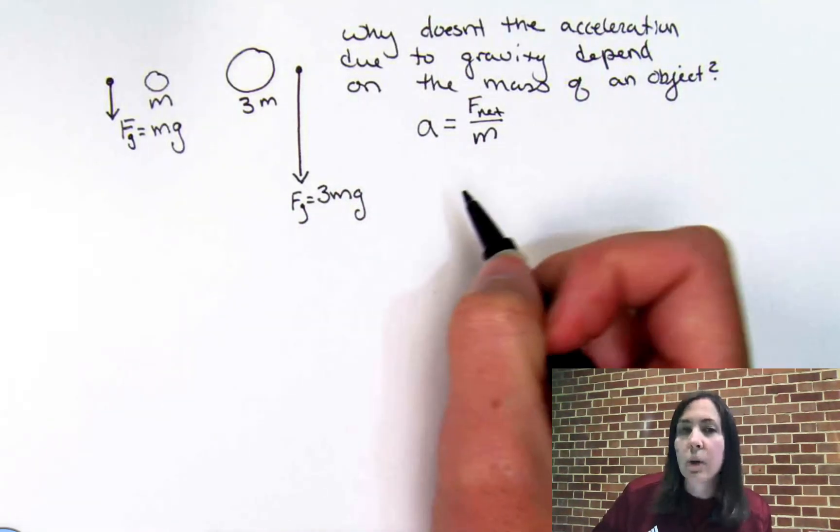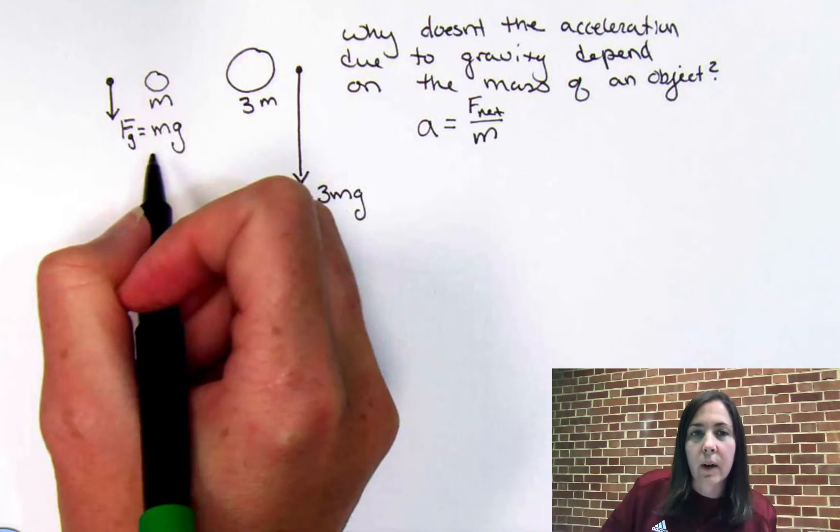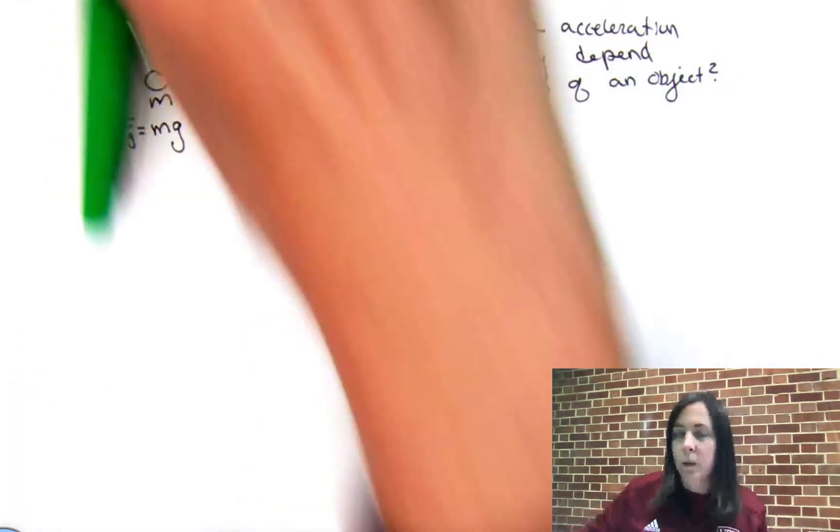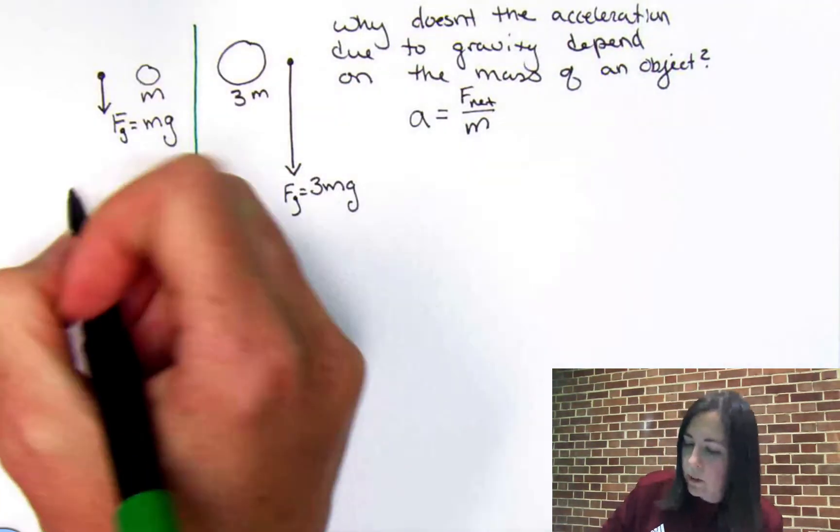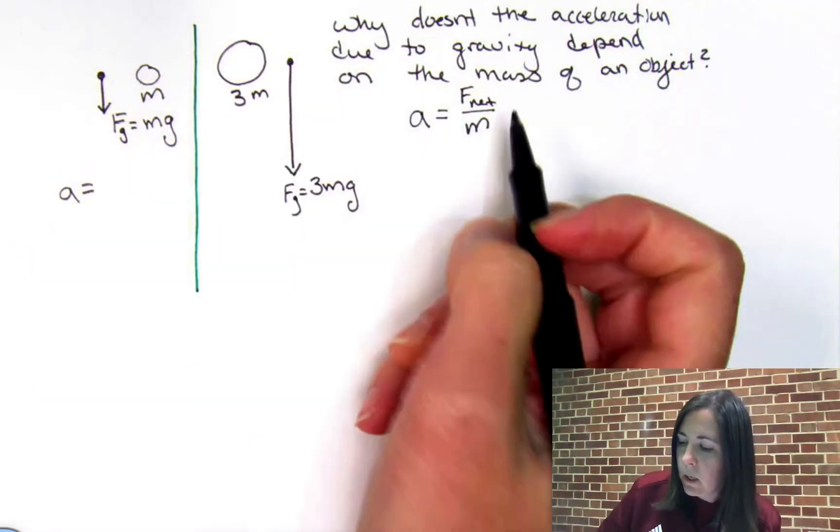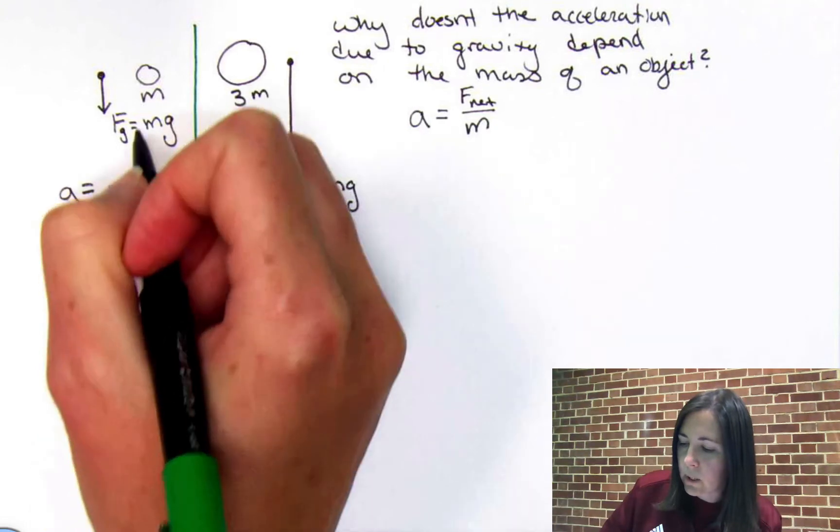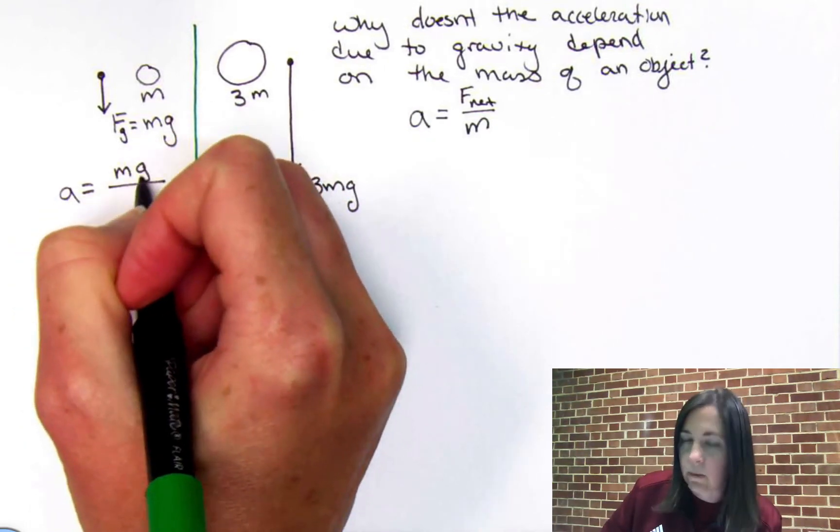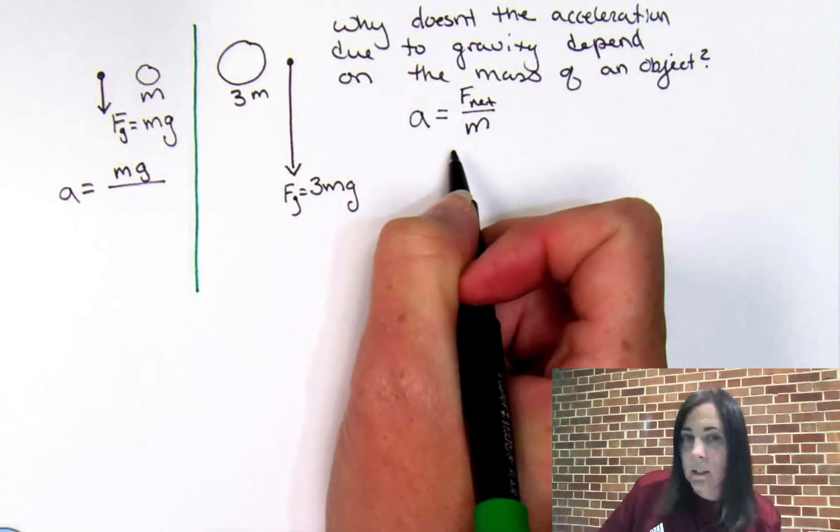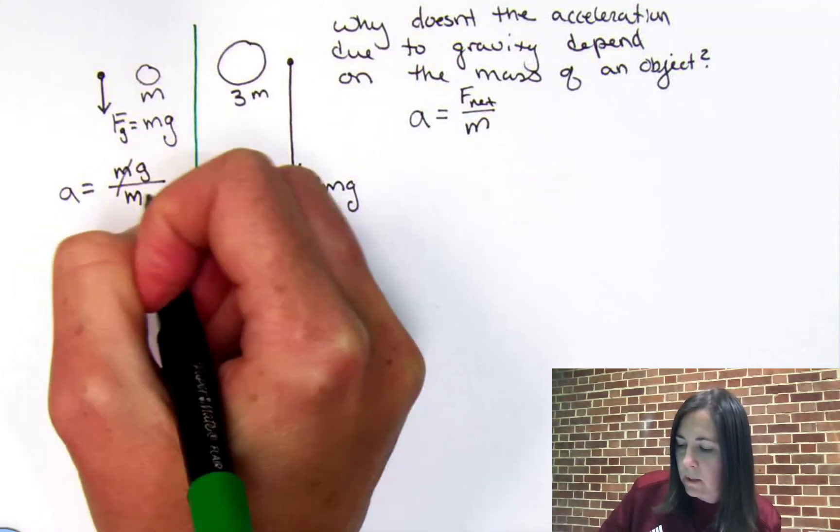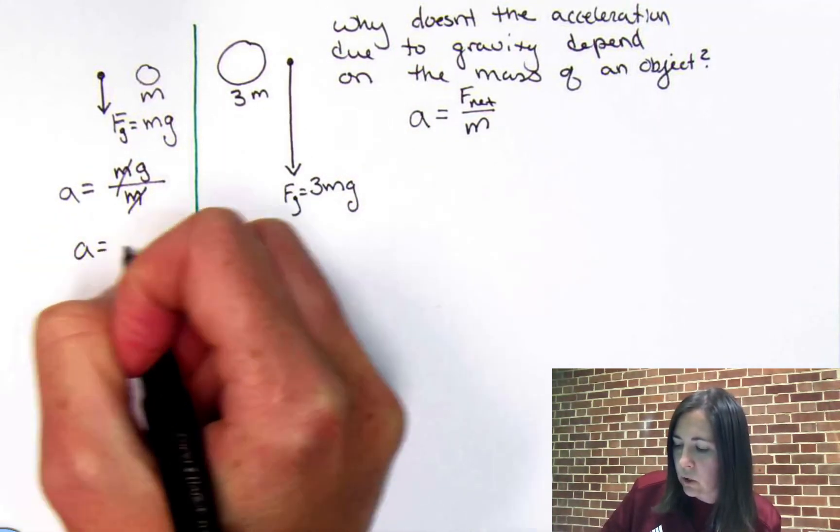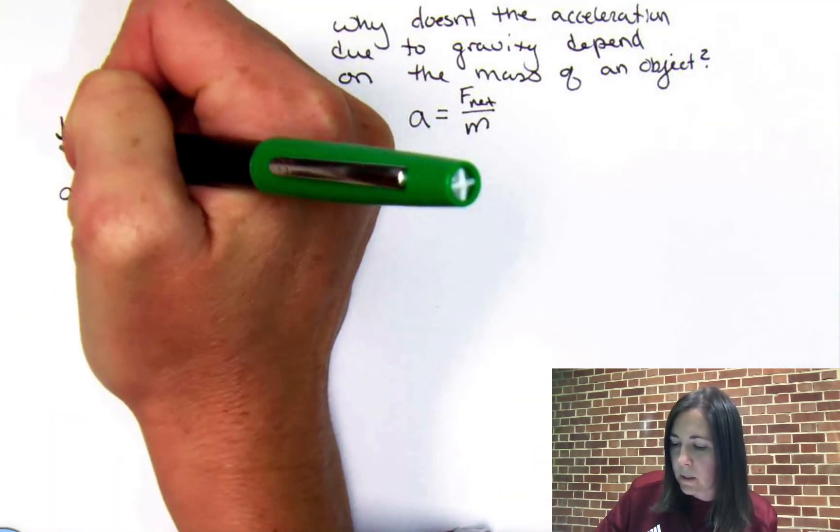And so, when we look at the acceleration of the first rock, acceleration is f net over m. We see that the net force is the mass times the gravitational field strength, and the mass of this rock is just little m, so the masses cancel, so the acceleration is just g, if you said down was positive.